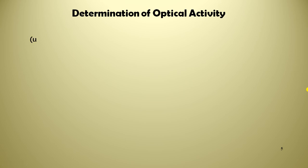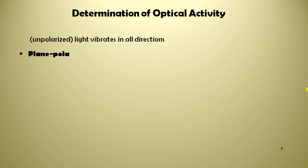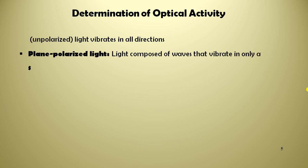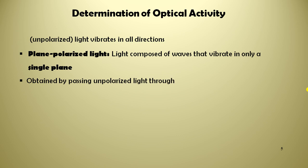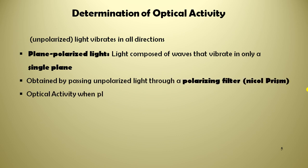Now, determination of optical activity. Unpolarized light vibrates in all directions, and plane polarized light is composed of waves that vibrate in only one single plane. You can obtain it by passing unpolarized light through the polarizing filter known as the Nicol prism.